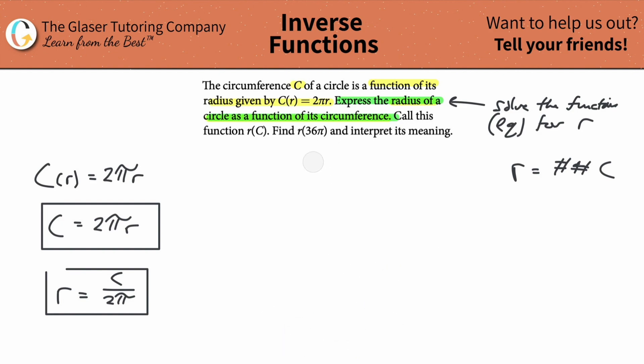So it says call this function r of C. So instead of calling this r, we should technically call it r(C) now. Equals C over 2π. And then it says find r(36π) and interpret its meaning. So basically what this is saying, find the radius when the circumference is equal to 36π.